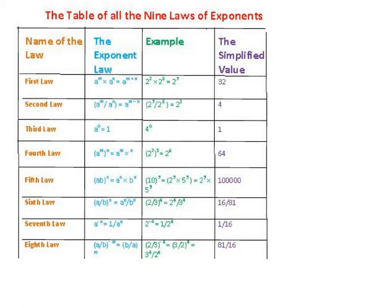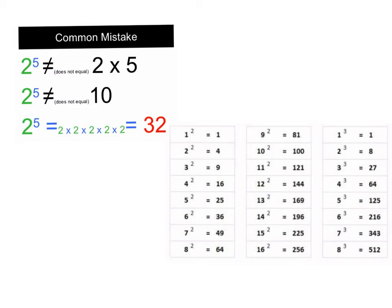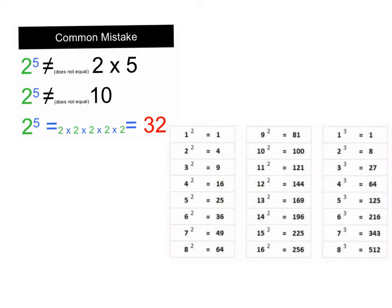Let's look at some examples from Study Island. Remember: 2 to the 5th power does not equal 2 times 5, which is 10 — that's completely wrong. What it does mean is you take 2 times itself 5 times: 2×2=4, ×2=8, ×2=16, ×2=32. It might also be helpful to have some perfect squares and cubes memorized to make these problems go faster; if not, just work through the multiplication step by step.